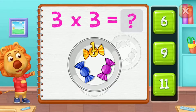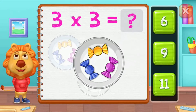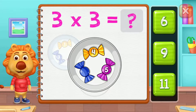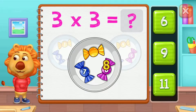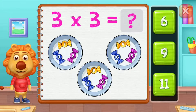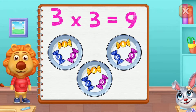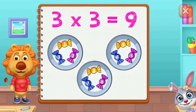1, 2, 3, 4, 5, 6, 7, 8, 9. 3 groups of 3 equals 9.